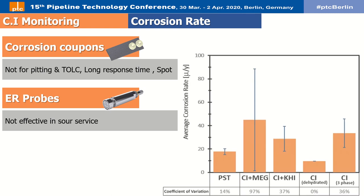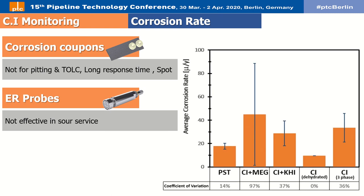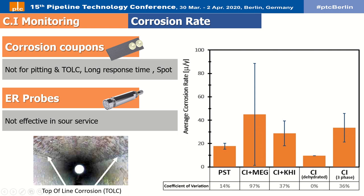In South Pars, an imidazoline-based film-former corrosion inhibitor was adopted. Comparing results of corrosion rate acquired by coupons and ER probes, complete dehydration of three-phase fluid leads to the lowest general corrosion rate. The next best method was pH stabilization, with the most reliable data. Although general corrosion rates acquired with corrosion inhibitors show mild metal loss, recent findings have proven events of top-of-line corrosion under specific conditions.